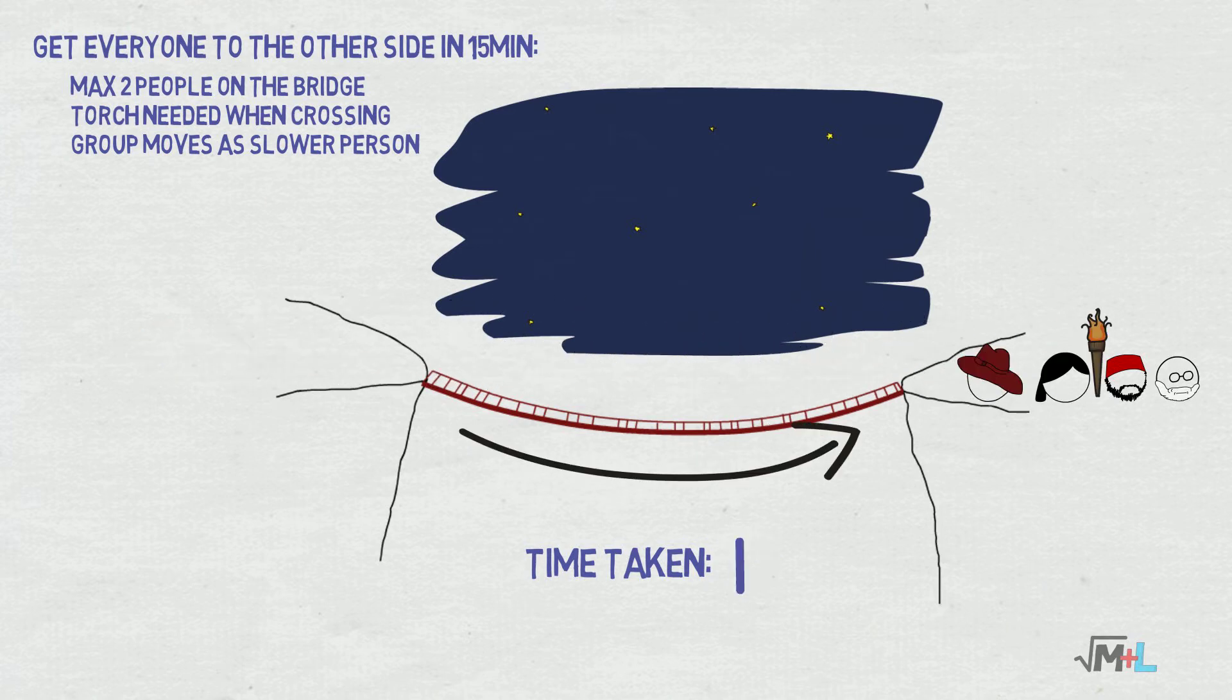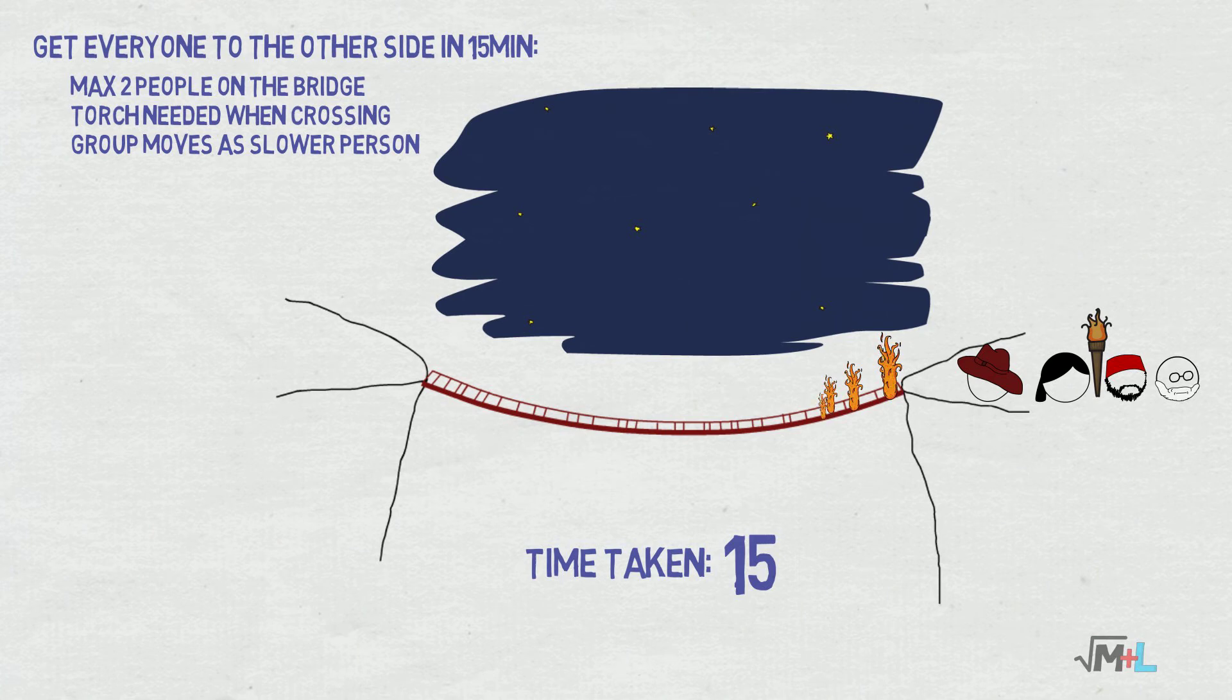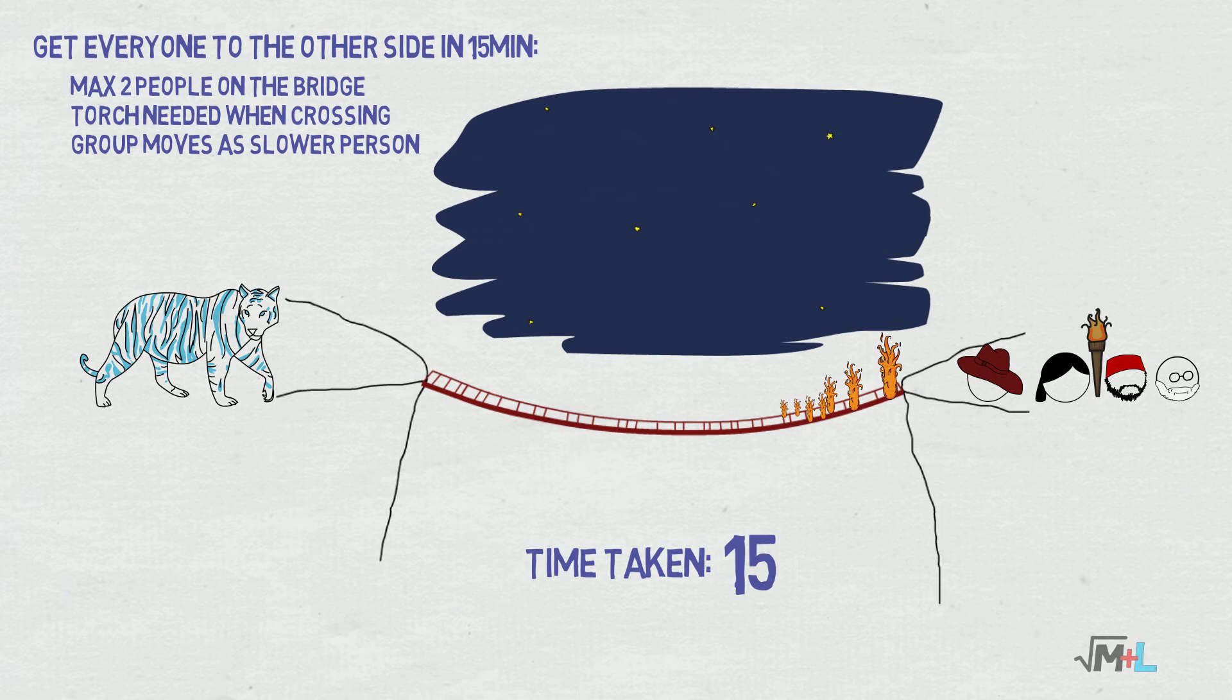Finally, together they take two minutes to get to safety and set fire to the bridge. It takes 15 minutes total, so when tigers arrive there will be nothing left to eat and a wall of fire separating them from the dinner.